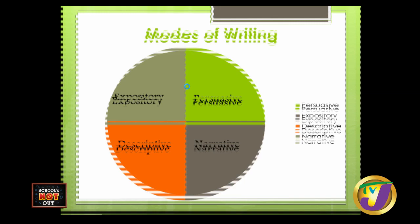Let's do an activity. On the screen we have four sentences, and I'm going to ask Sharika to identify the mode of writing found in each sentence. The first one says: she did not sit the Spanish exam in May. This is giving us some information — it's a fact. This should be expository writing. The second sentence says: therefore, the expression is meaningless. The word 'therefore' is a transitional word, suggesting something was said before. This sounds persuasive.